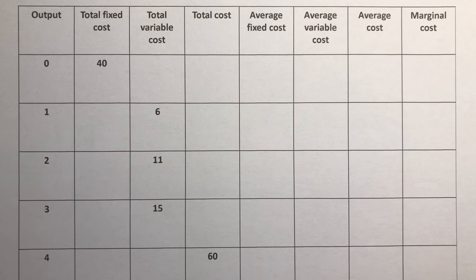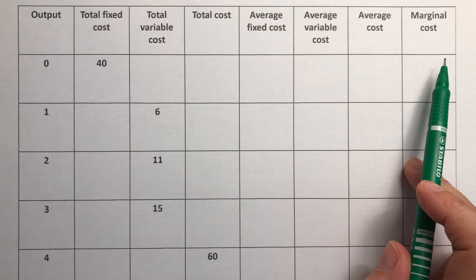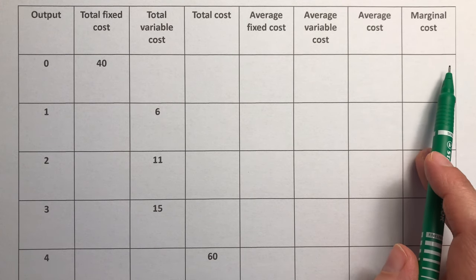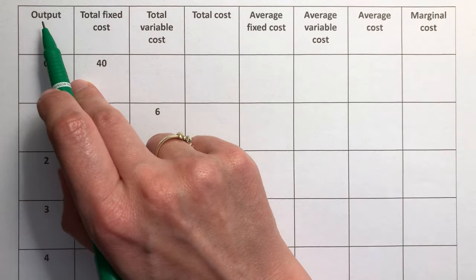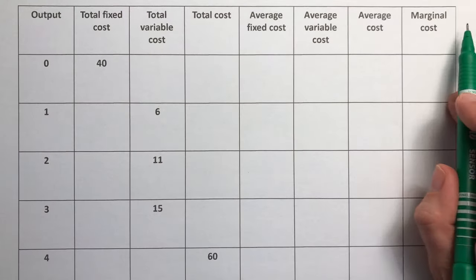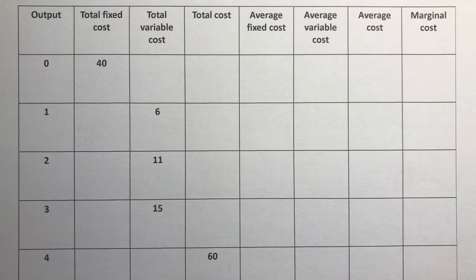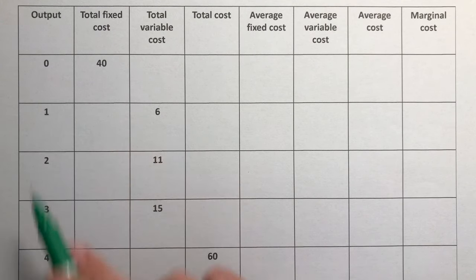In this video I'm going to explain how you calculate the seven different types of costs that you can look at for any business. This is showing all the different types of costs along the top, and down here it depends how many units of output we have. We're going to imagine this is a car factory, looking at situations from producing no cars at all to producing four cars.